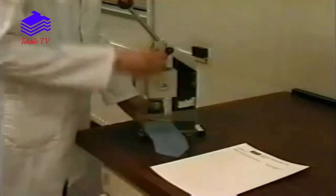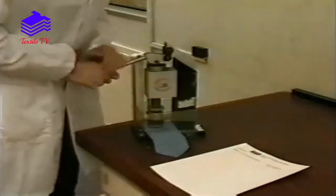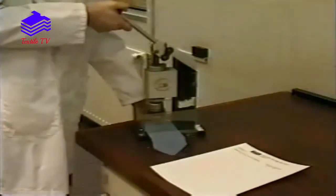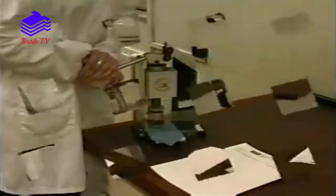A selected area of fabric is cut from the main sample, then four circular test specimens are cut out using a cutting die.